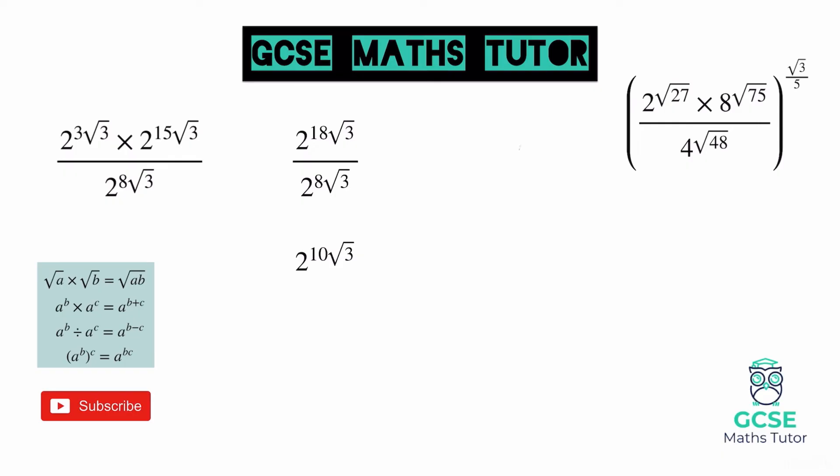So the next logical step is to put that back into the original bracket, which was to the power of root 3 over 5. So if we put that back into our bracket, and again we can apply the bracket rule there in our laws of indices, and we're going to multiply those powers. So 10 root 3 multiplied by the root 3 over 5. That 10 root 3 goes onto the numerator.